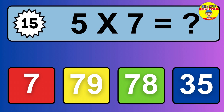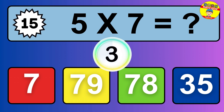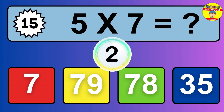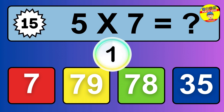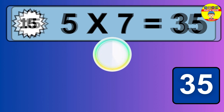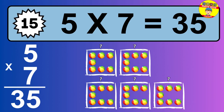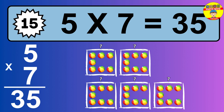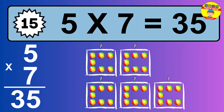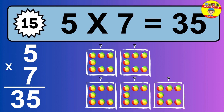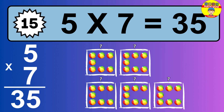Question 15. 5 times 7 equals what? The answer is 5 times 7 is 35. To calculate, we have 5 groups with 7 balls each one. So, how many balls do we have? 35 balls.